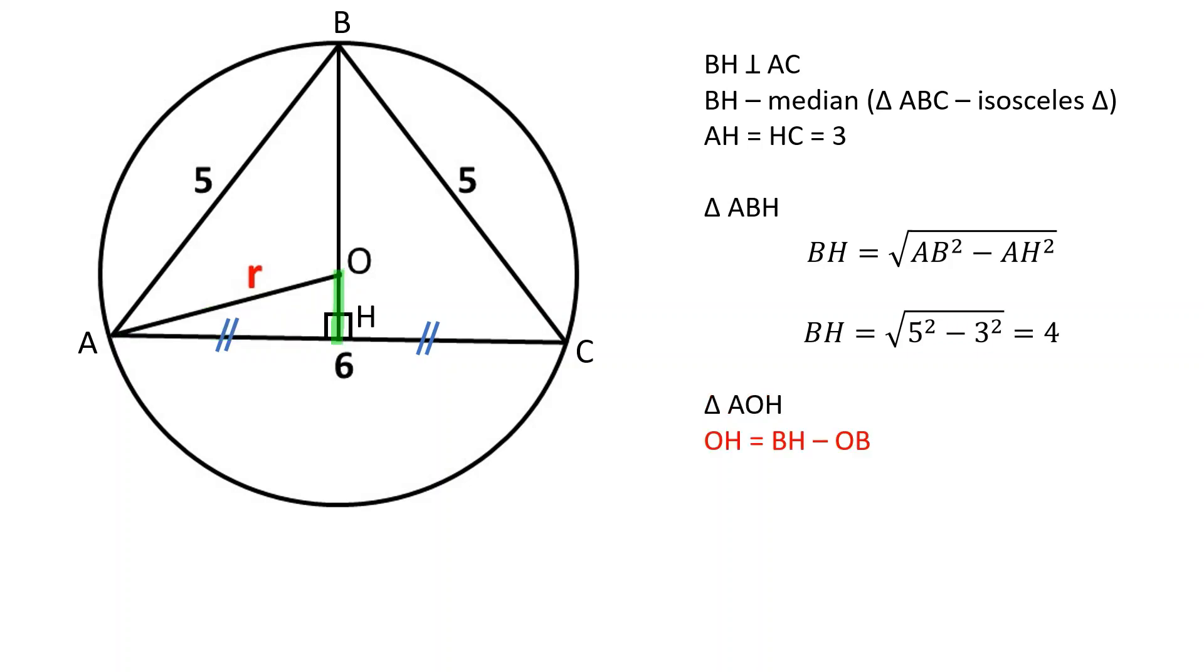OH equals BH minus OB, and since OB is the radius of the circle, OH equals 4 minus r.